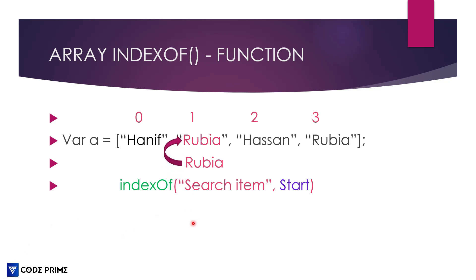If we search directly with the value 'Robaya', it will find the index which is one, because counting starts from zero. It finds the first 'Robaya' at index one. But 'Robaya' also appears at index three. You can find that one by providing a start counting index. If you count from index two, then it will display three. Let's do the practical example now in the coding studio.